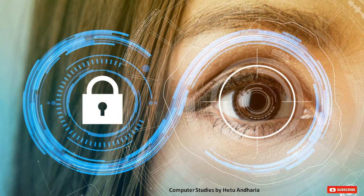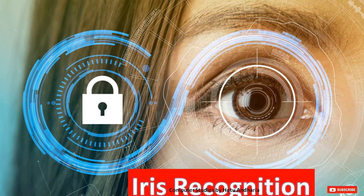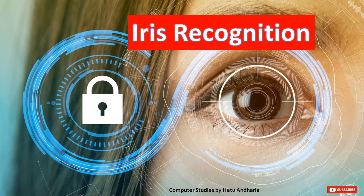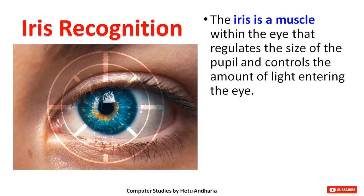The next biometric is iris recognition — how a person can be identified just by their iris or eye. The iris is a muscle within the eye that regulates the size of the pupil and controls the amount of light entering the eye. Looking at the diagram, you can see blue-colored muscles, which science students will understand well. The iris helps in changing the size of the pupil. If you want to see how your pupil changes, stand in front of a mirror and shine your smartphone torch into your eye — the pupil size will change at once.